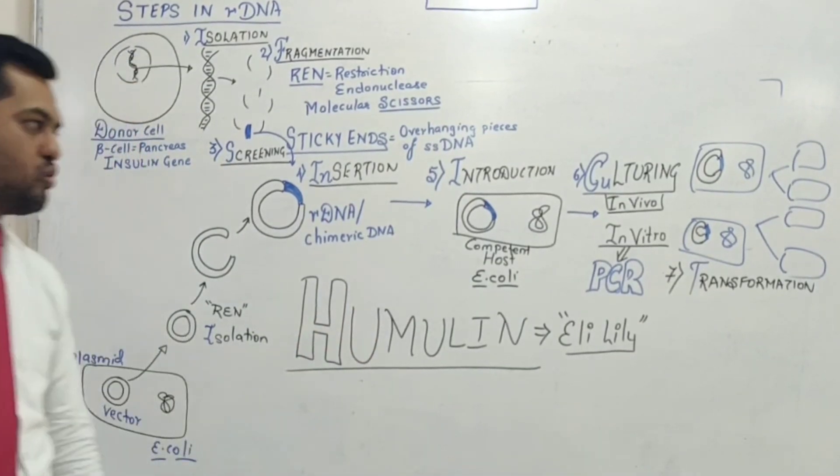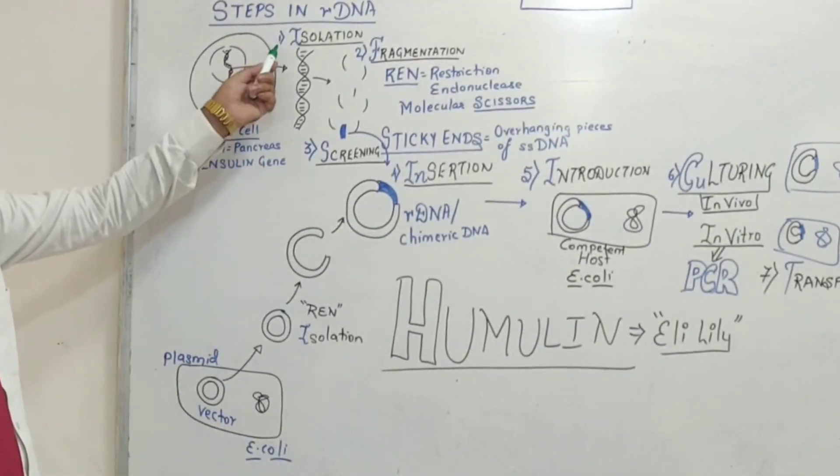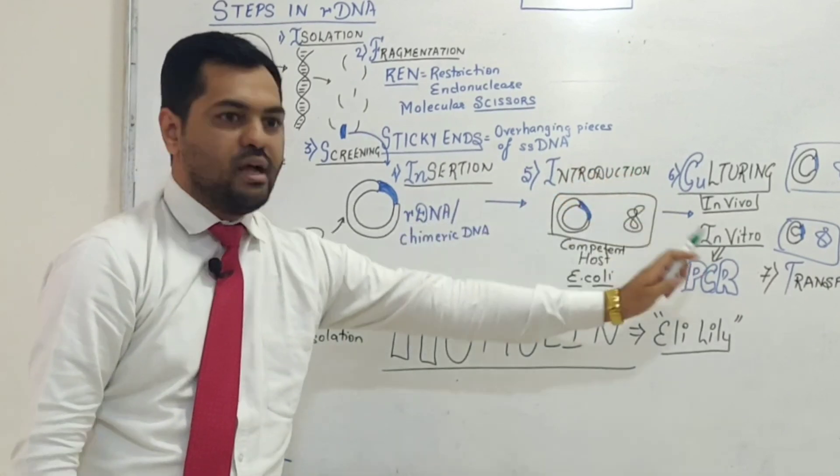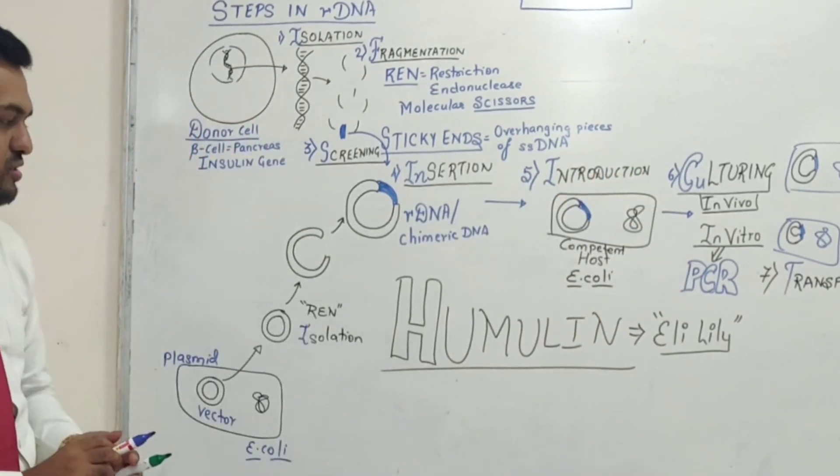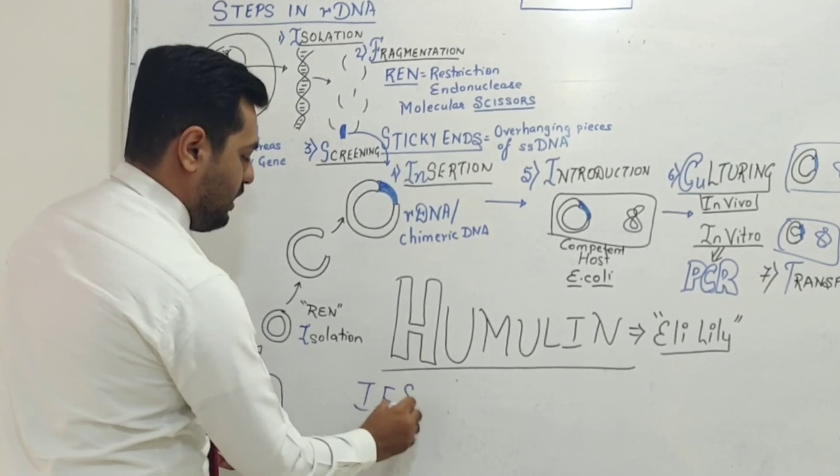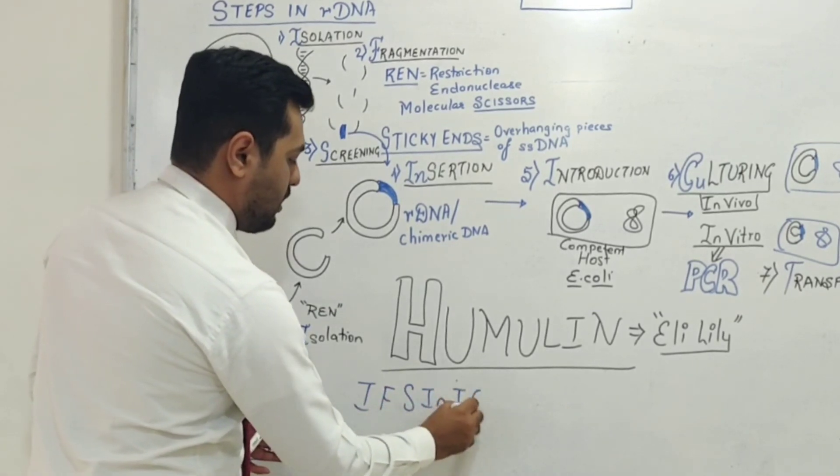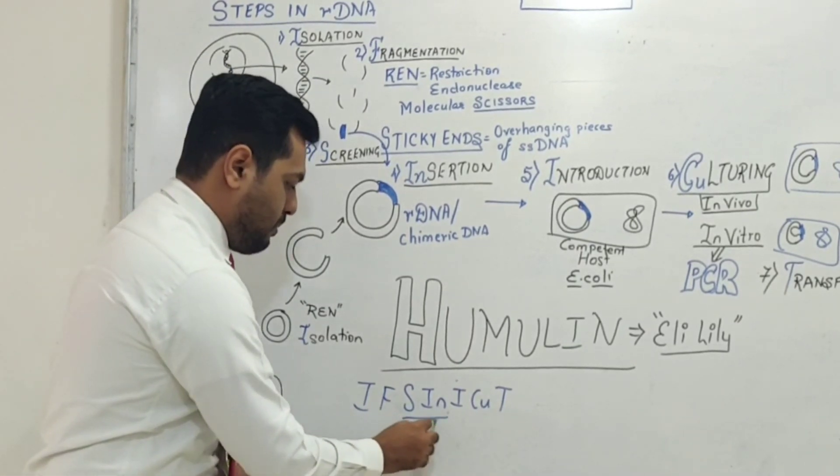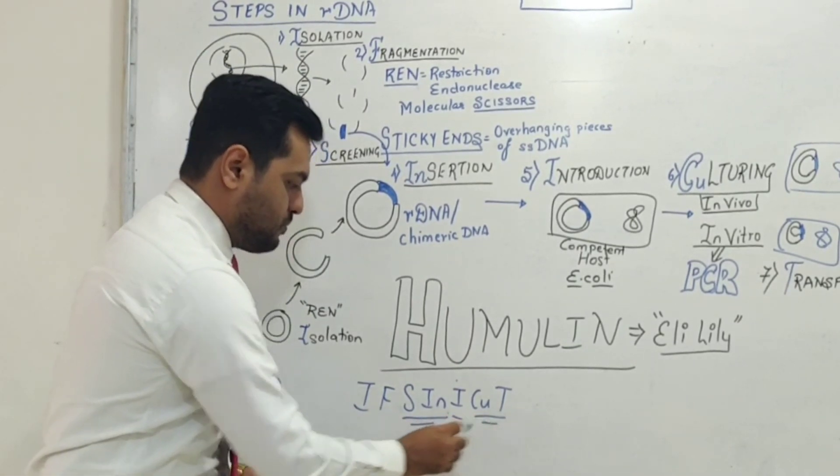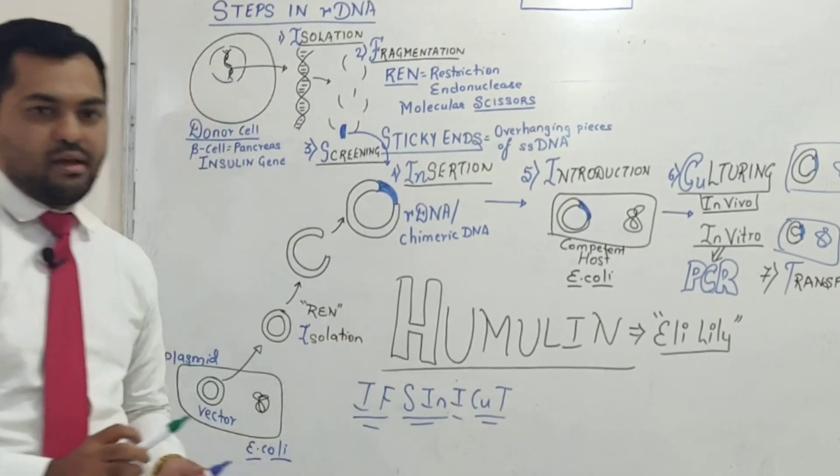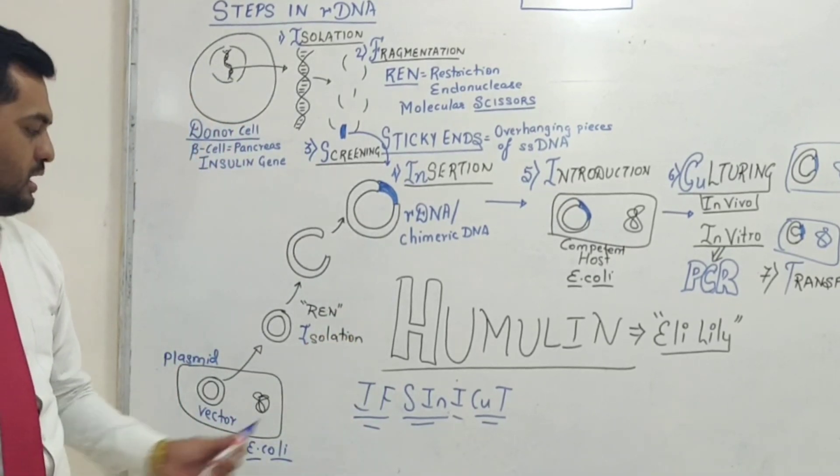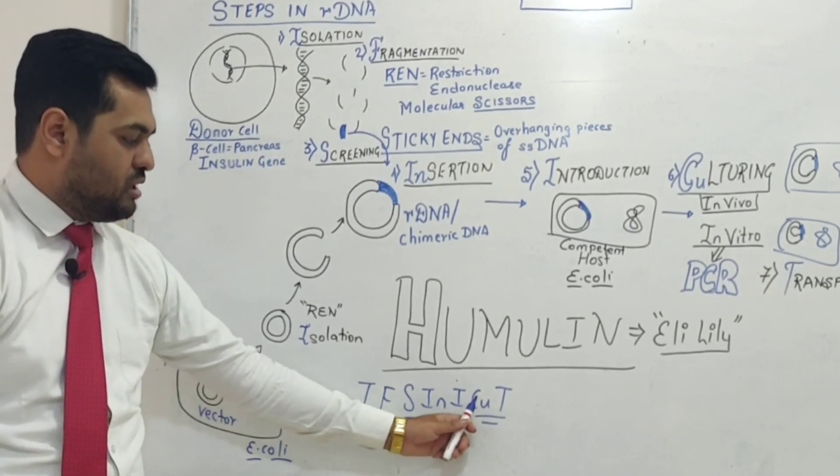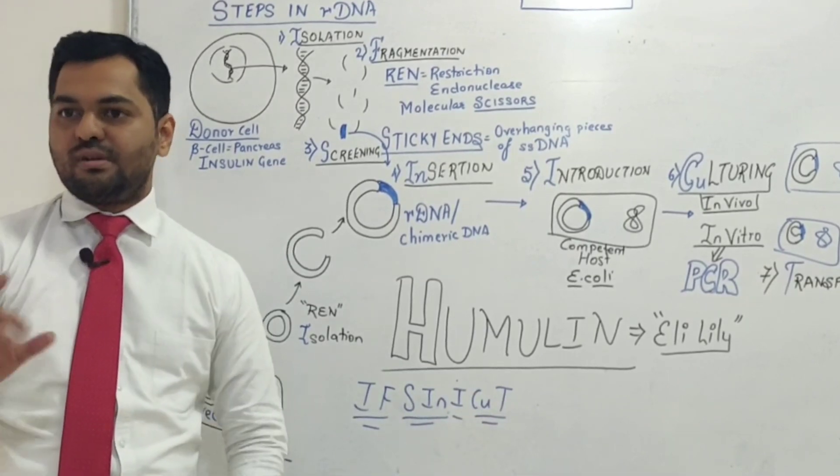So seven steps: isolation, fragmentation, screening, insertion, introduction, culturing, and transformation. To remember this, I'll give you a short form: 'if sin I cut' - isolation, fragmentation, screening, insertion, introduction, culturing, transformation. Seven steps.